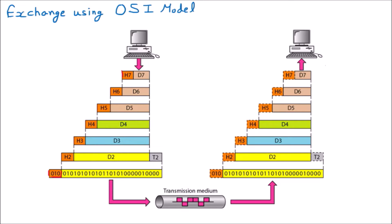We are discussing how data exchange happens using the OSI model. There is a diagram on screen representing OSI data transfer. There are seven layers of the OSI model: application, presentation, session, transport, network, data link, and physical layer. They are numbered one through seven, with one being physical and seven being application layer.